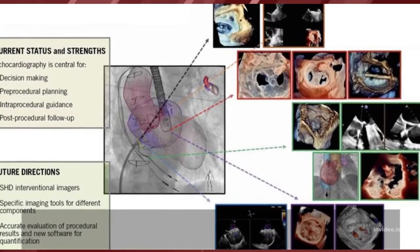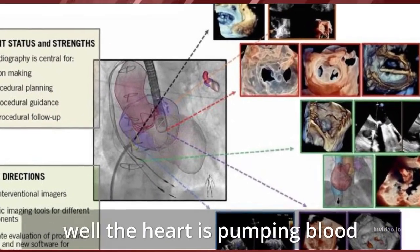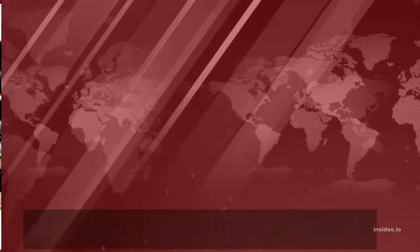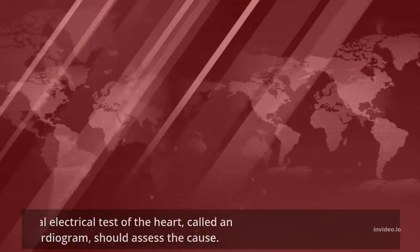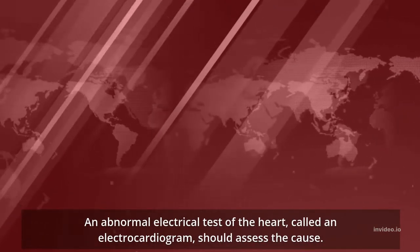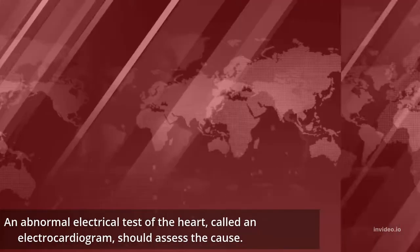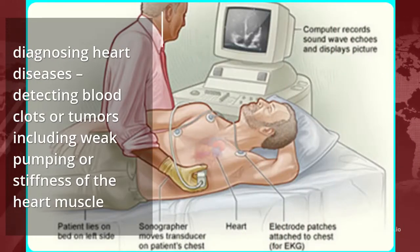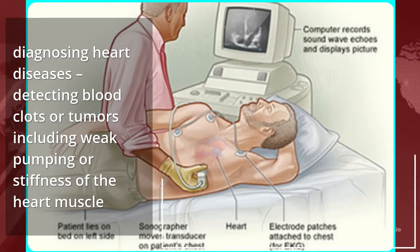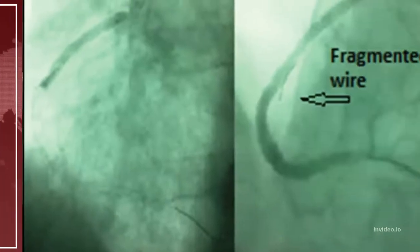What is echocardiography used for? The first thing is to determine how well the heart is pumping blood. An abnormal electrical test of the heart, called an electrocardiogram, should assess the cause. It is also used for diagnosing heart diseases, detecting blood clots or tumors, including weak pumping or stiffness of the heart muscle.